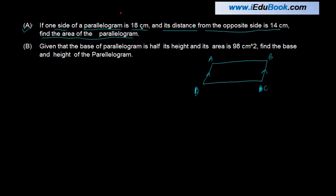You are told that one of the sides is 18 cm. Let's call AB as 18 cm. And its distance.